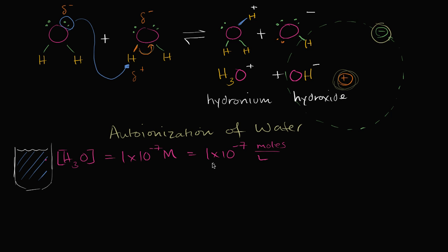Now you might be saying, well, what's a mole? I encourage you to watch the video on what a mole is, but a mole is a quantity — it's like saying a dozen, but much larger. A dozen is equal to twelve of something; a mole is approximately equal to 6.02×10²³ of something, and you're typically talking about molecules.